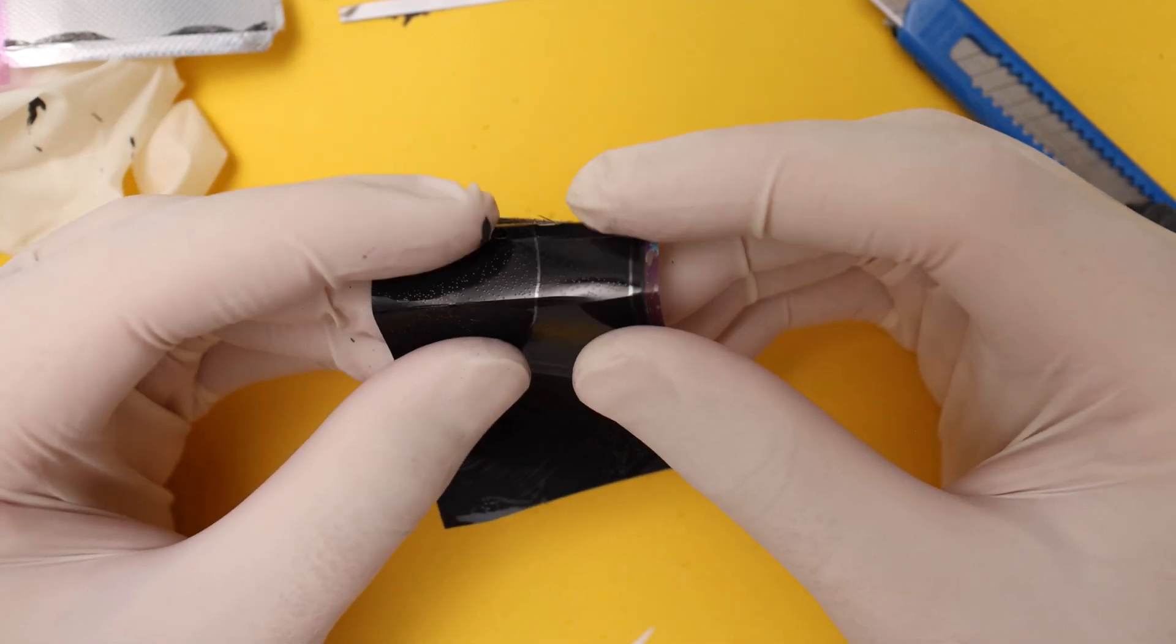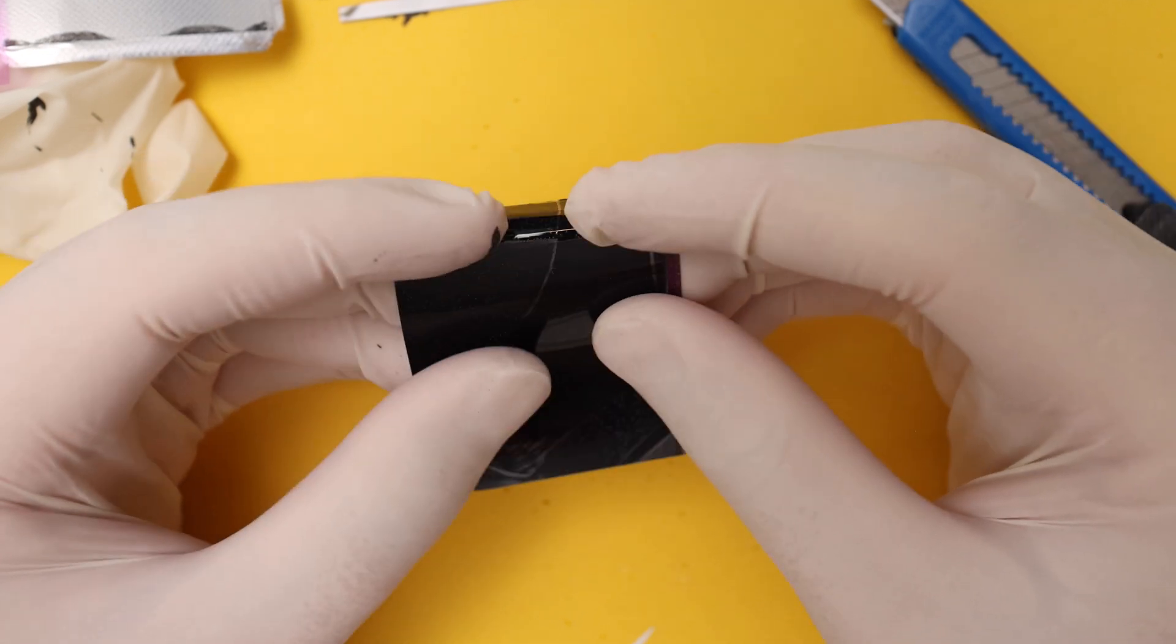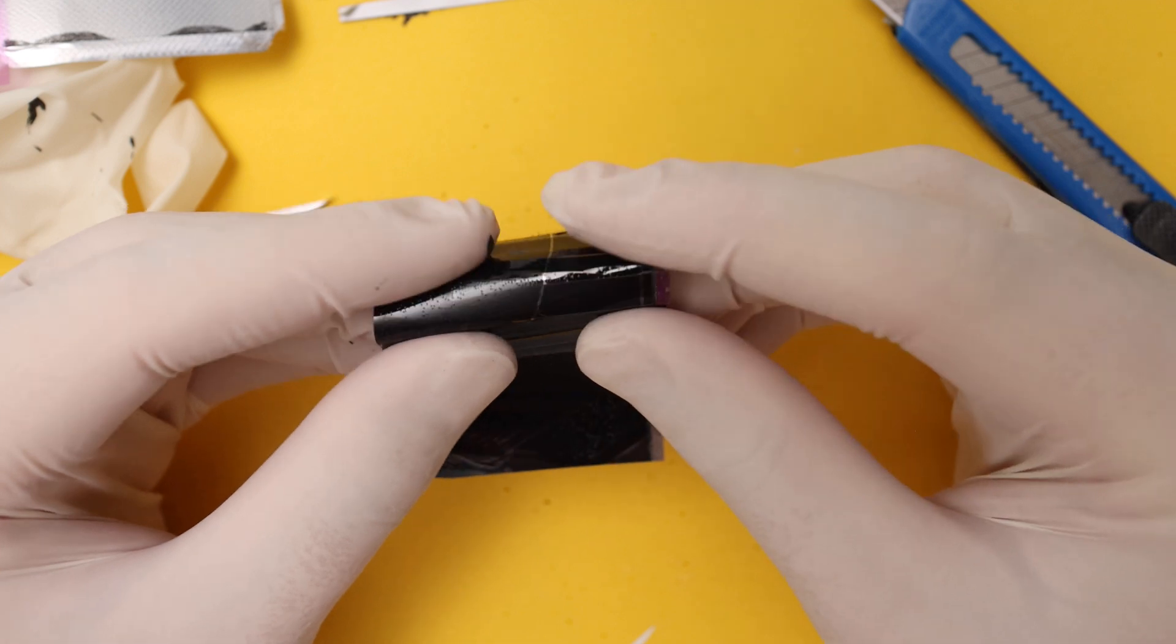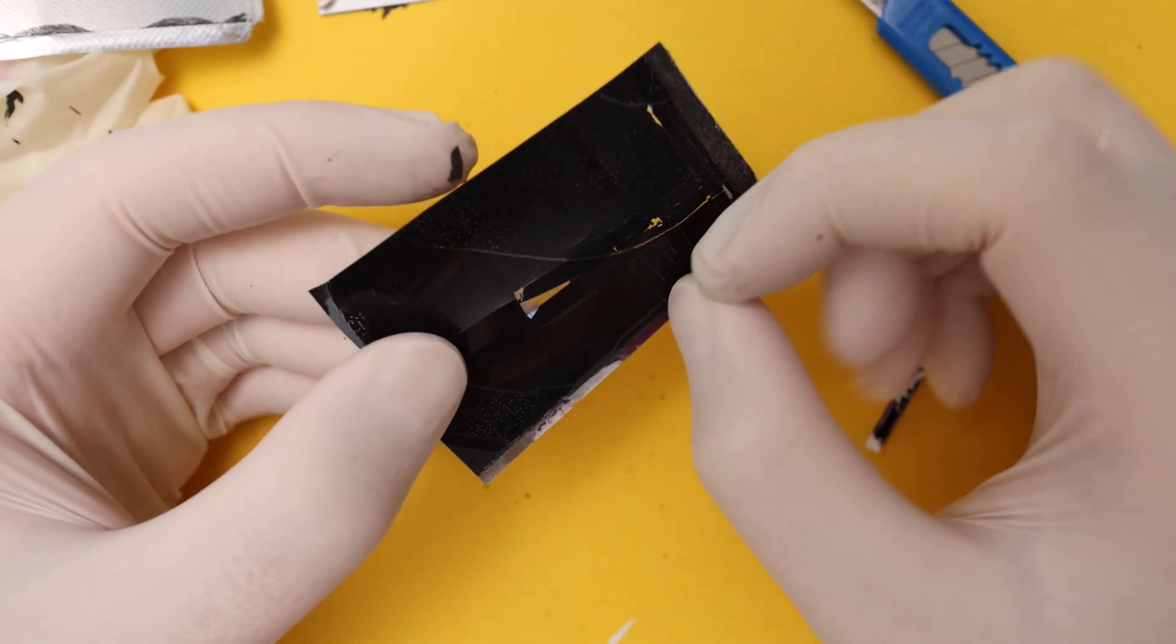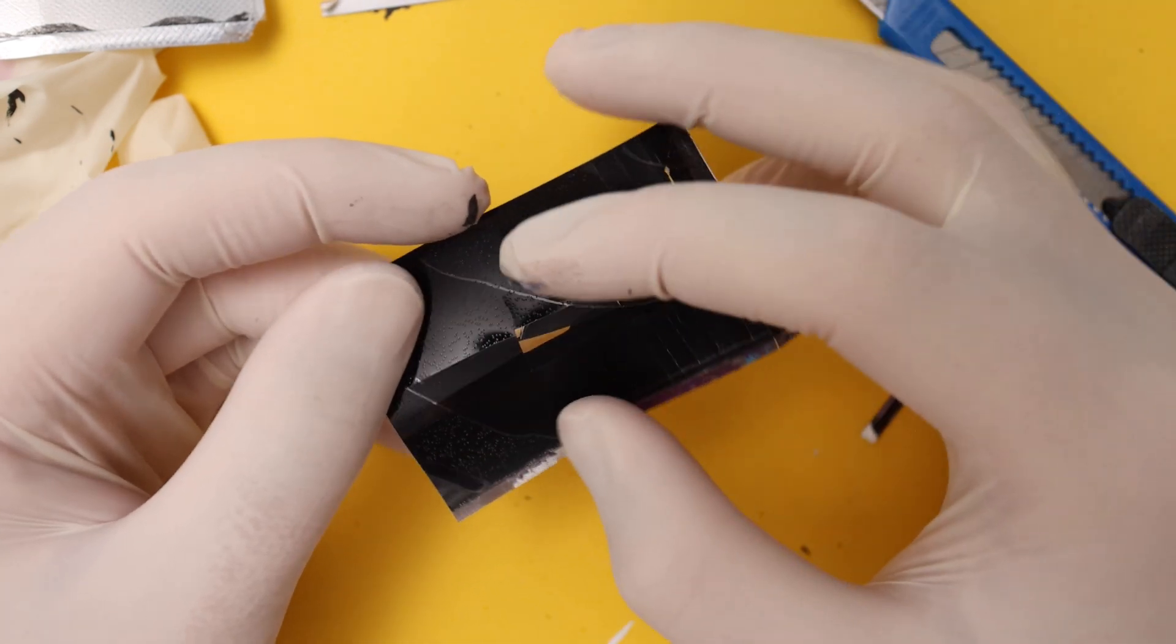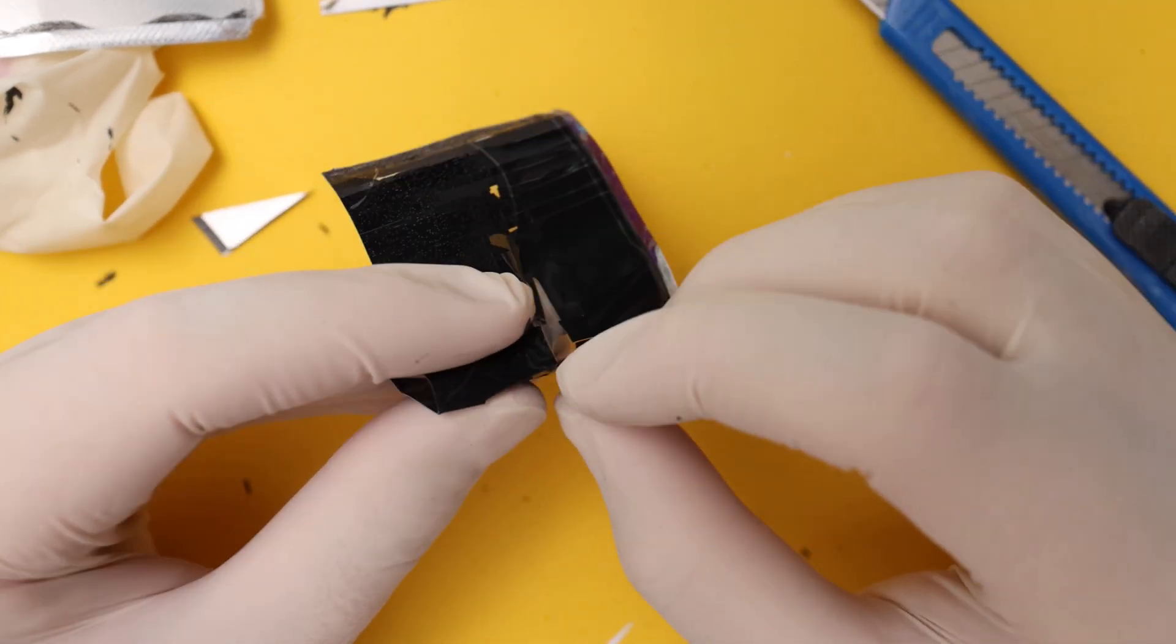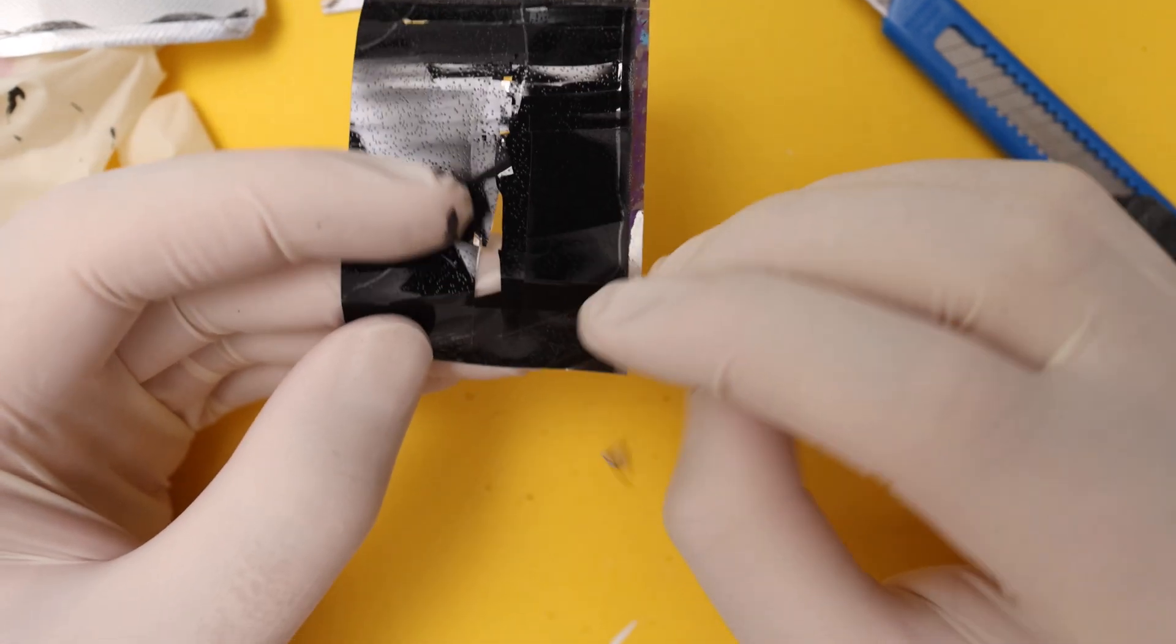So you don't want to be bending your prints too much because this dried up developmental chemicals are gonna crack on you. Now you can see I can kind of separate the layer all the way. So the developmental mixture and the picture are kind of fused together, so you can't really do like an emulsion lift or anything like that, which is too bad.